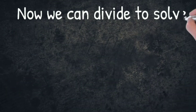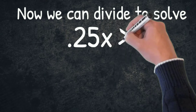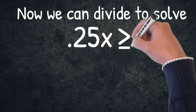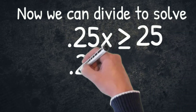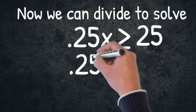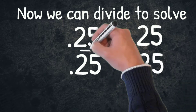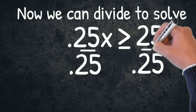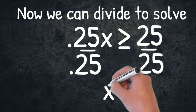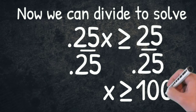Now we can divide to solve it. 0.25x is greater than or equal to 25. If we divide both sides by 0.25, we find our final solution where x has to be greater than or equal to 100.